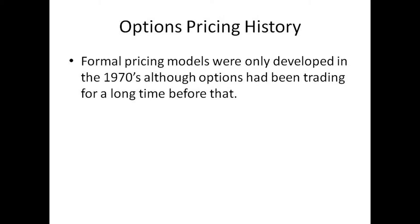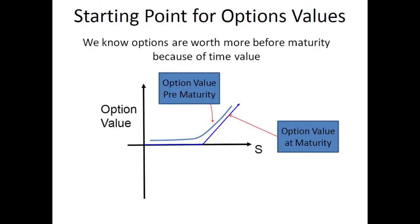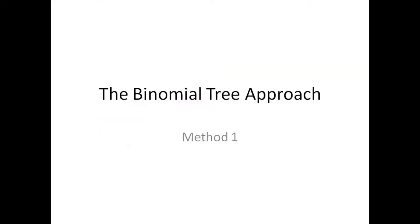We know from payoff diagrams the value of options at maturity — it's basically the relationship between the strike price and the spot price at expiration. We also know that options are worth more before maturity because of time value. The light blue line labeled 'option value pre-maturity' is worth more, and as we move closer to maturity that line moves in until at expiration we have the payoff diagram. We just really need to work out how much more than intrinsic value an option is worth before it matures.